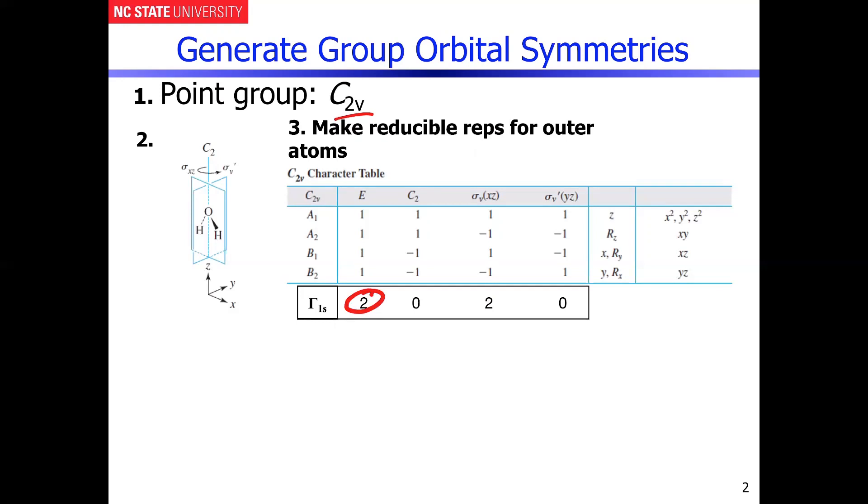Under the C2 operation as you can see that will interconvert the two hydrogens. So that gives you a character of zero. And of course if we look at the mirror plane that's in the molecular plane that basically leaves the atoms unshifted. So with two unshifted atoms the character is two.